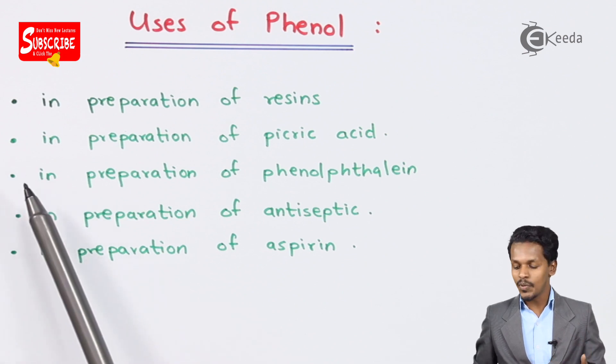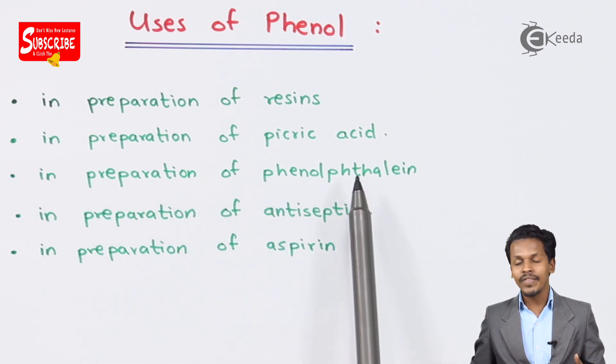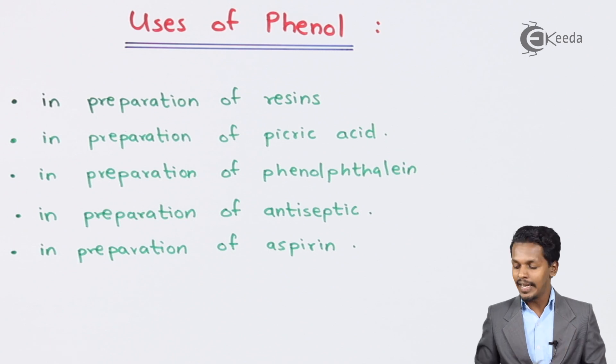Talking about the next one, phenol is used in the preparation of phenolphthalein, and phenolphthalein is used as an indicator in acid-base titration.